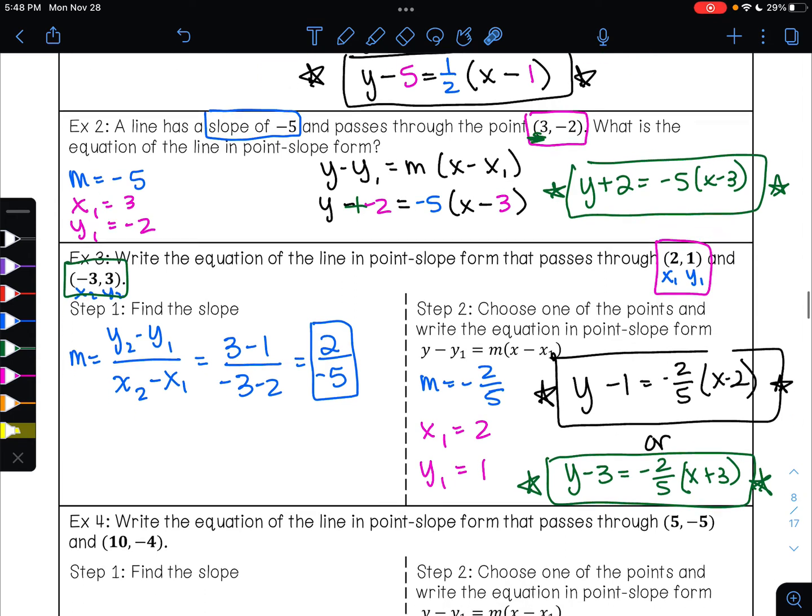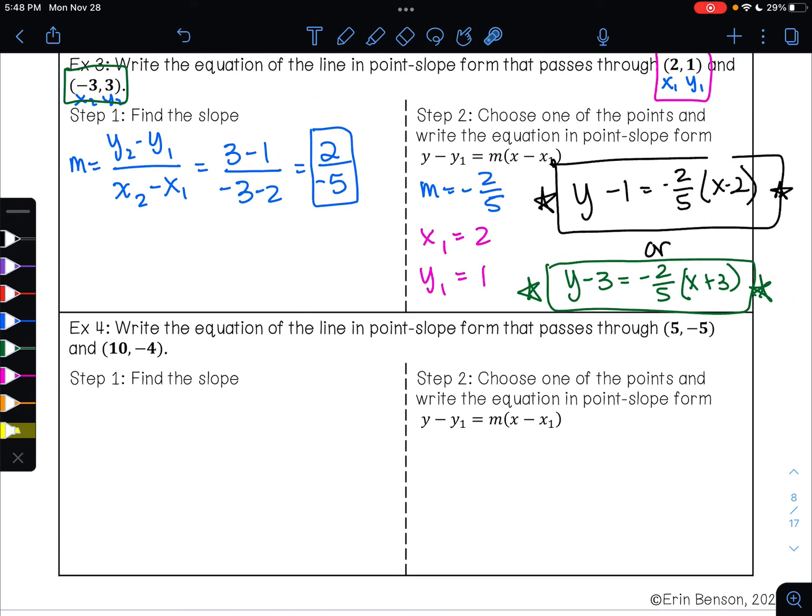Let's try that process again with example 4. On example 4, it says write the equation of the line in point-slope form that passes through the point (5,-5) and (10,-4). Our first step is to find the slope. And again, I'm going to use the slope formula. Best piece of advice I can give you is to label your points. x₁, y₁, x₂, y₂. So I'm going to have y₂ minus y₁ over x₂ minus x₁. We know that minus a negative becomes a positive. Negative 4 plus 5 is 1. 10 minus 5 is 5. So my slope is negative 1/5.